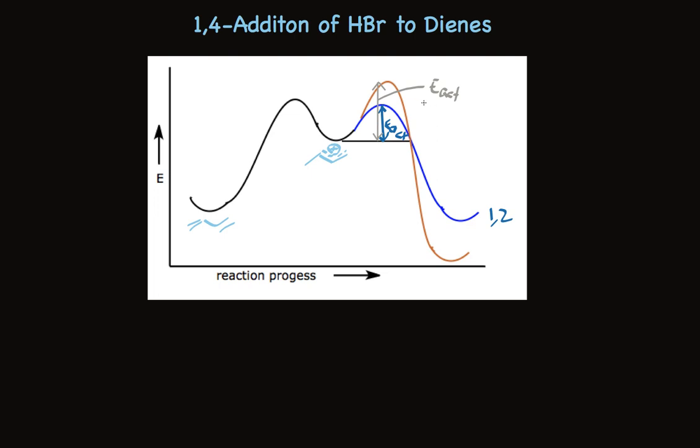So it's formed more slowly but under reversible conditions. Eventually, the more stable product will predominate.